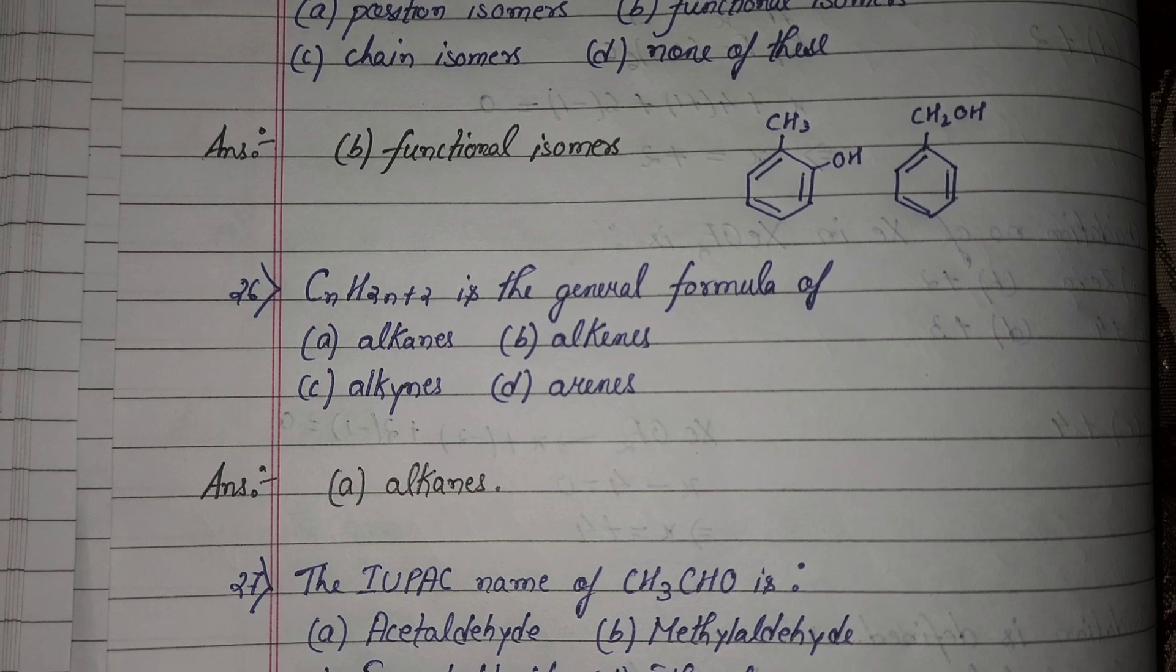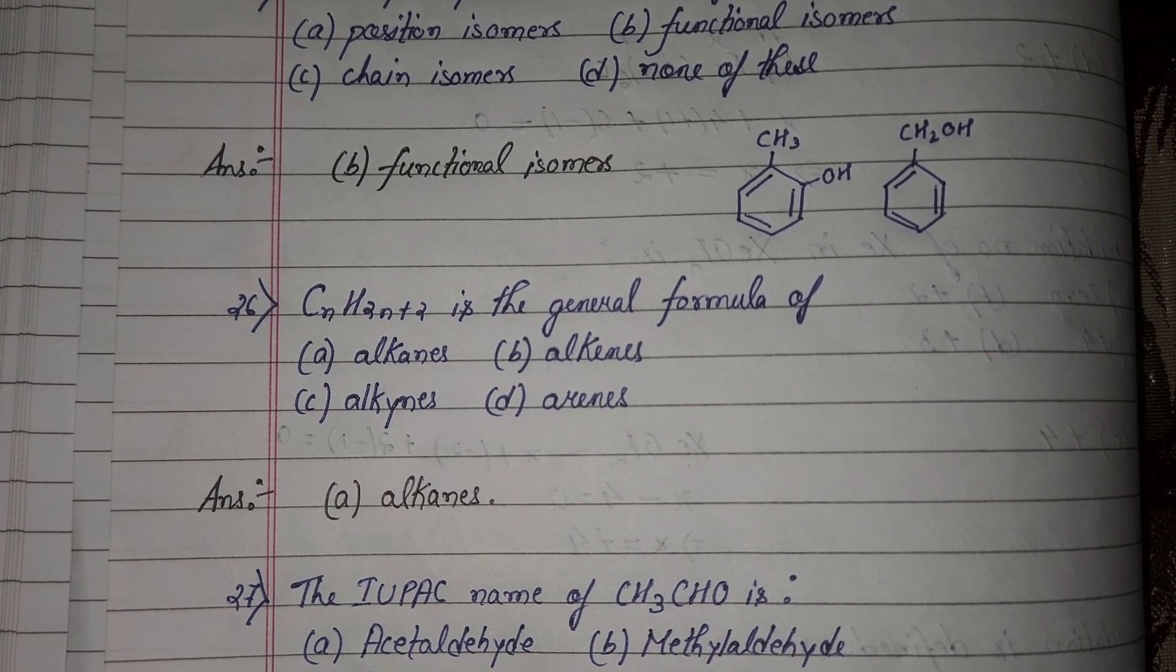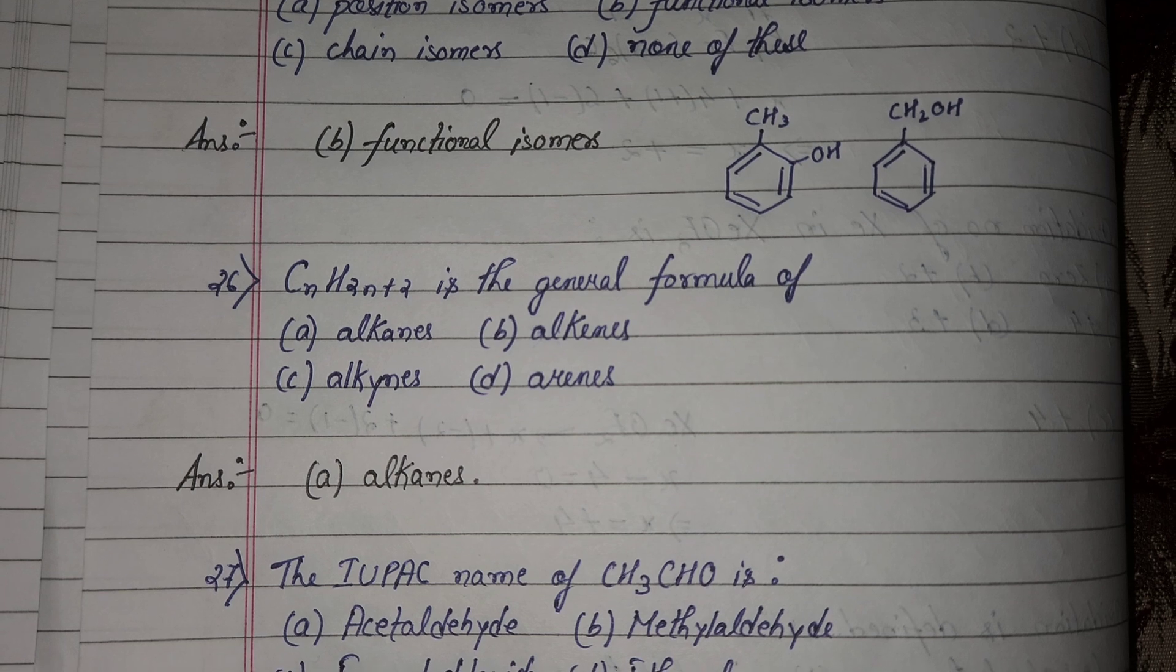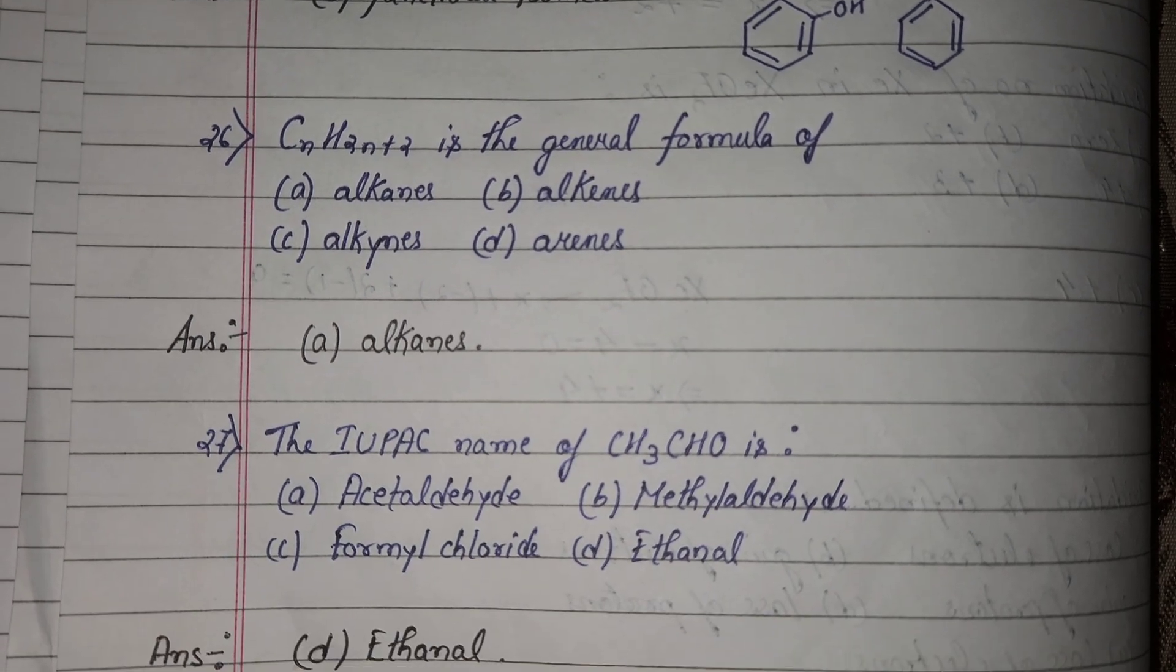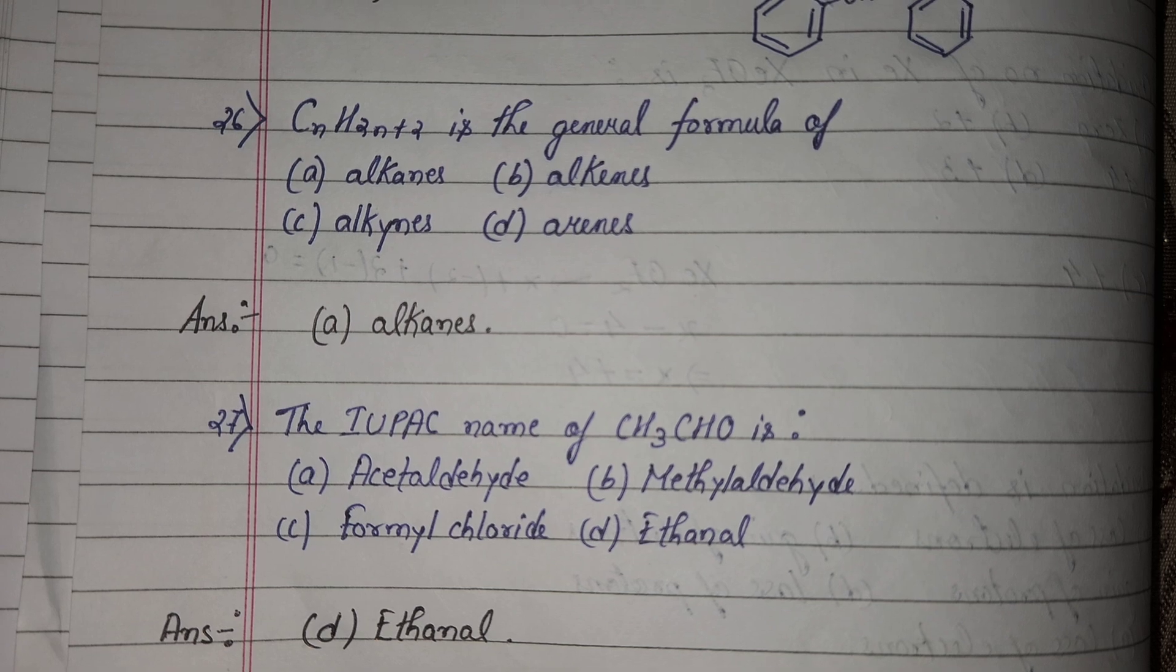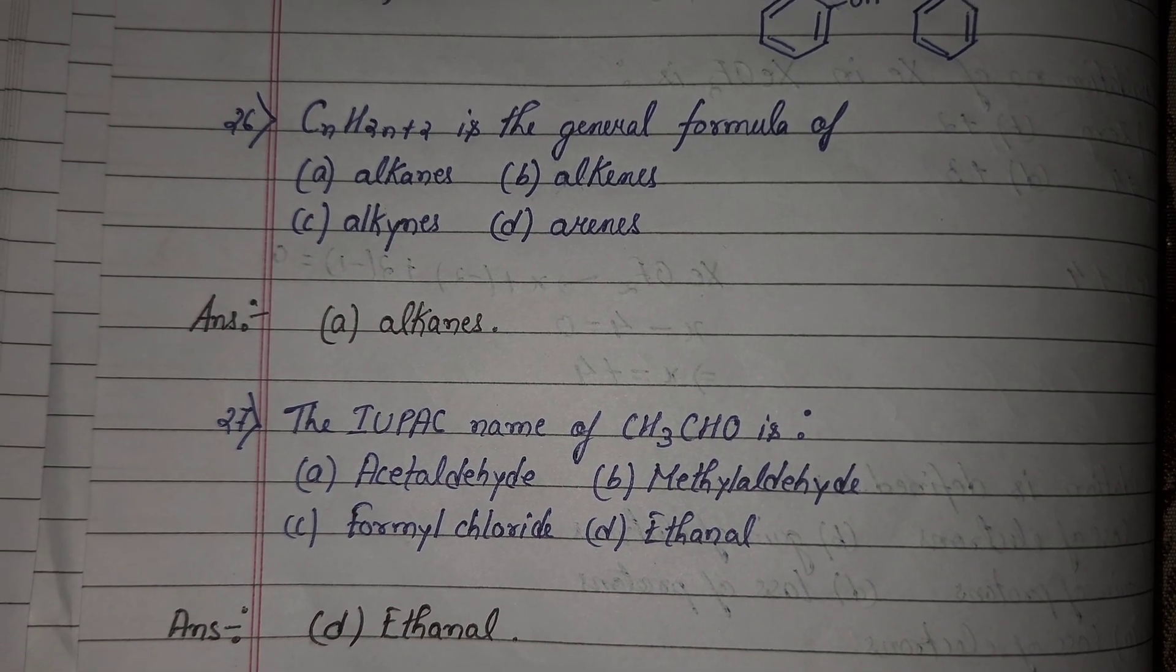Next question number 26, CnH2n plus 2 is the general formula of alkane. Option number A will be correct answer. Next question number 27, the IUPAC name of CH3CHO is ethanal. Option number D will be correct answer.